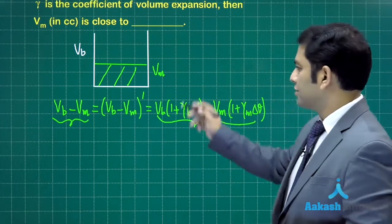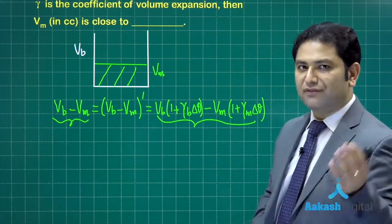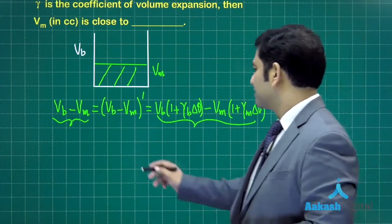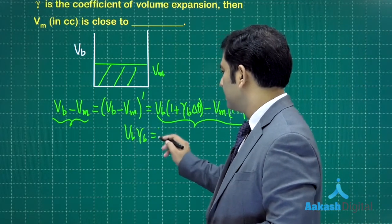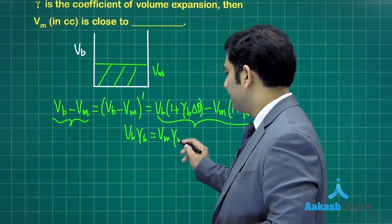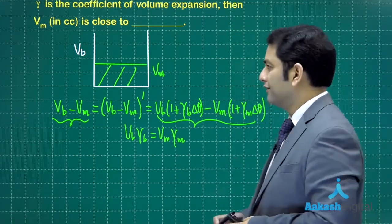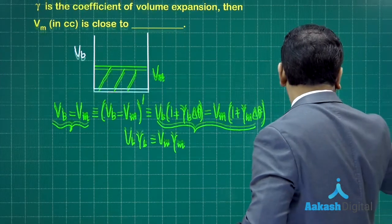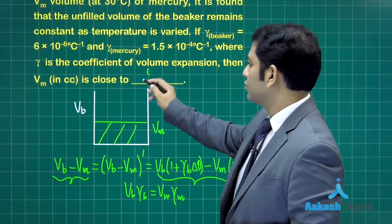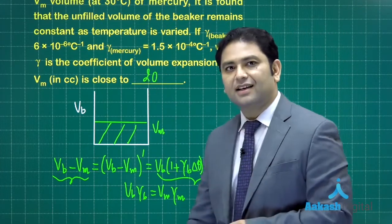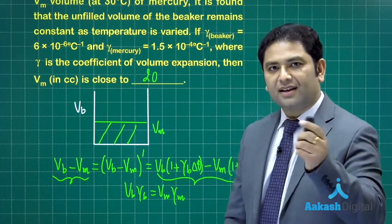Let's equate this equation with this equation. Easy cancellation of Vb and Vm will happen, so this will lead to Vb gamma b equals Vm gamma m. The data is completely given, and when you solve that, volume of mercury in cc has been asked, and that will be 20 cc. So 20 is the correct answer.